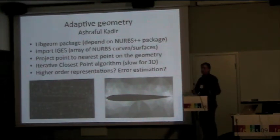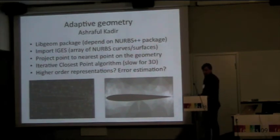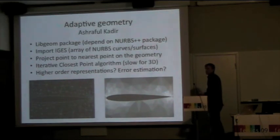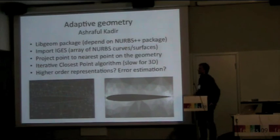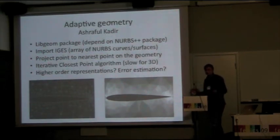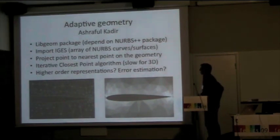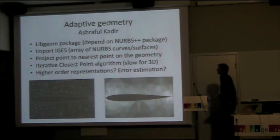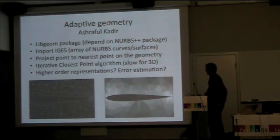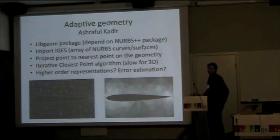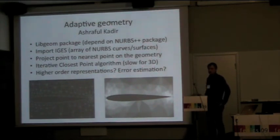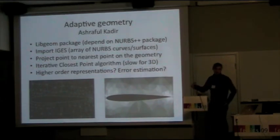These are things we have done with Unicorn. Now I'll give a short update on things we're currently working on. One thing is that we want to capture geometry better. A first step would be to project our mesh to any given surface — the surface can come from a CAD description or something like that. This is being worked on in the master thesis project of Ashraful Kadir, who has developed the libgeom package, which builds on NURBS++. We are also experimenting with using Gmesh instead, with the idea of projecting an arbitrary point onto the surface.